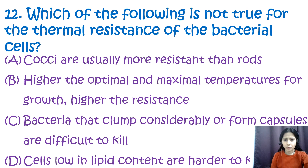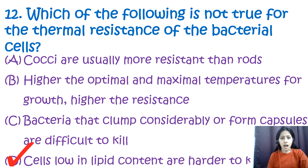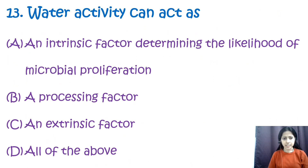Question number twelve: which of the following is not true for the thermal resistance of bacterial cells? Option A: cocci are usually more resistant than rods; option B: higher the optimal and maximal temperatures for growth, higher the resistance; option C: bacteria that clump or form capsules are difficult to kill; option D: cells low in lipid content are harder to kill than other cells. The correct answer is option D — this is false. Cells high in lipid content, such as spores, are more resistant to heat than cells low in lipid content.